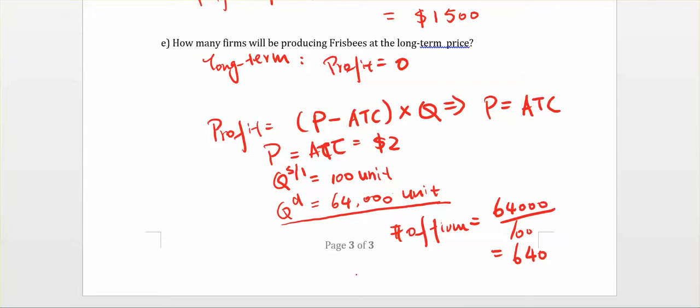To summarize: the first key concept is the profit maximization rule for competitive firms. The second is understanding at what point you reach long-run equilibrium. The third is that since each firm is identical, to find how many firms are on the market, divide the total market demand by the production quantity for one firm.